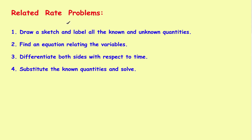This is part four of the related rate series. We'll work a problem using the series of four steps to solve these. If you use these four steps whenever you have related rate problems, it will generally guide you pretty straightforwardly to the answer. The problem we're going to do this time is a classic called the shadow problem — almost every calculus student runs across it. It's challenging not because the math is hard, but because it's tricky to set up. The steps are: draw a sketch and label all known and unknown quantities, find an equation that ties all those variables together, differentiate both sides with respect to time, and finally substitute the known quantities and solve.